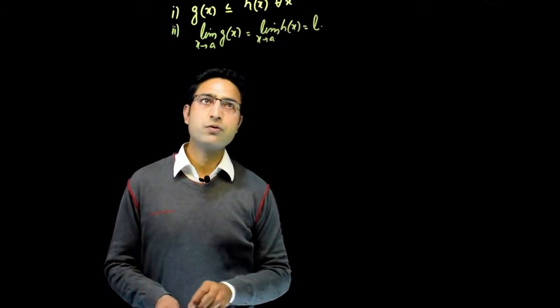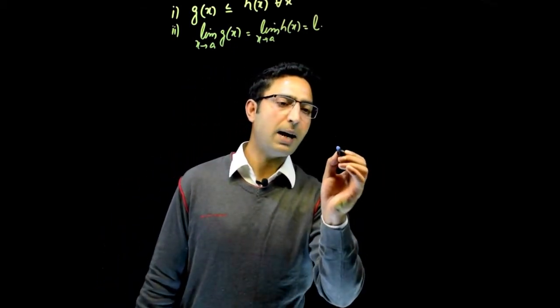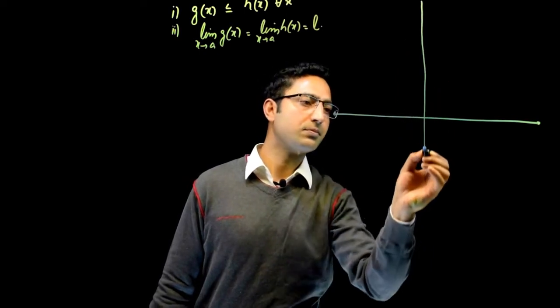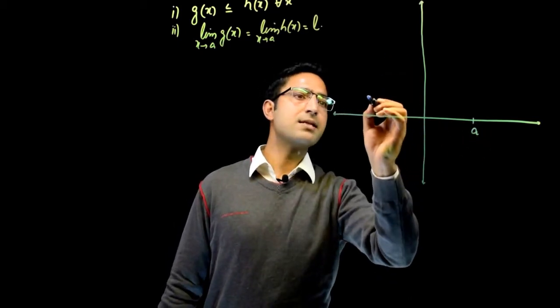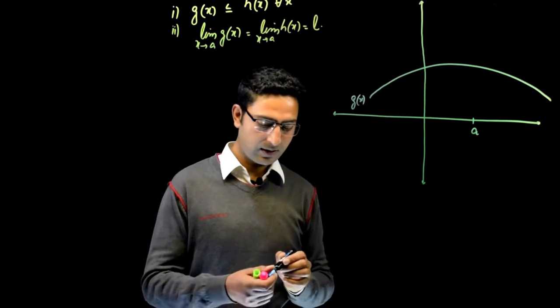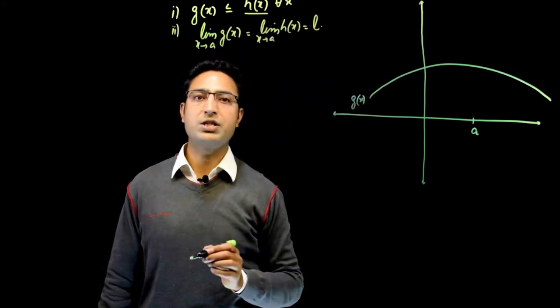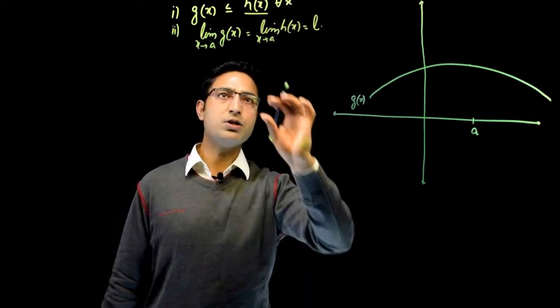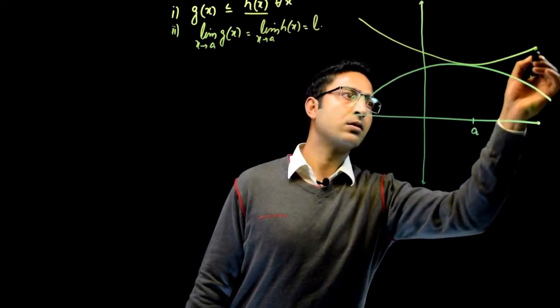If we look at a graph of these two functions g(x) and h(x) with these two conditions, then their graphs will be something like—let me first draw the coordinate system here, the x-axis and the y-axis. Suppose that this is the point a. Now, if this is the graph of g(x).